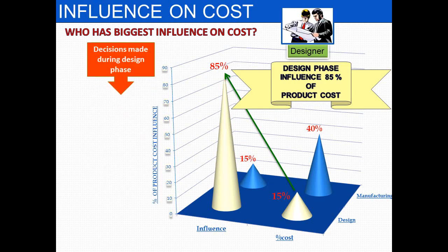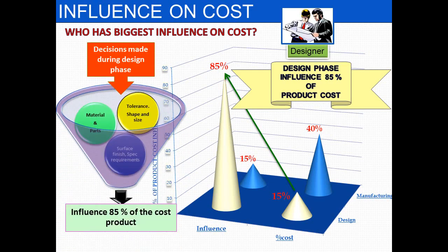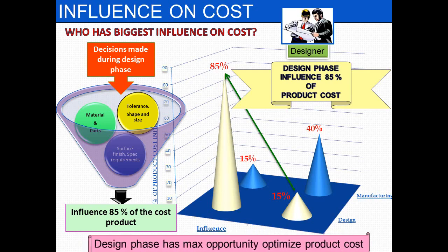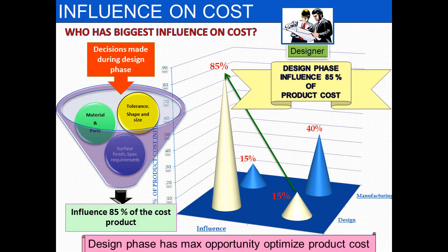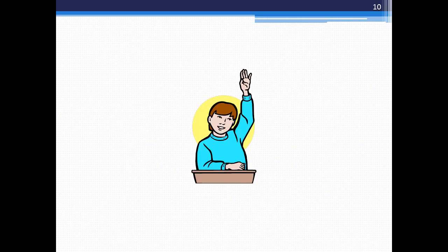The decisions made during the design phase — such as material and parts, tolerances, shapes and sizes, surface finish, and specification requirements — influence 85 percent of the product cost. So the design phase has the maximum opportunity to optimize the product cost. It is very essential to optimize product cost at the design phase. Thank you for your time. Happy learning.